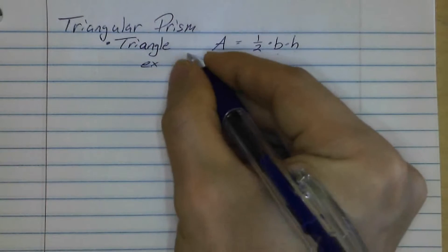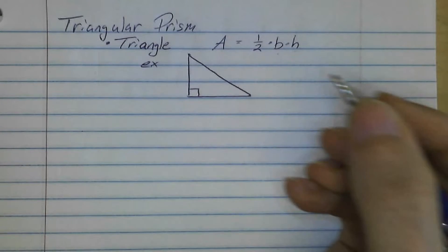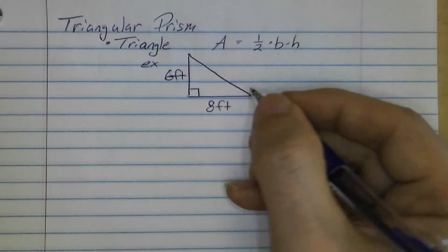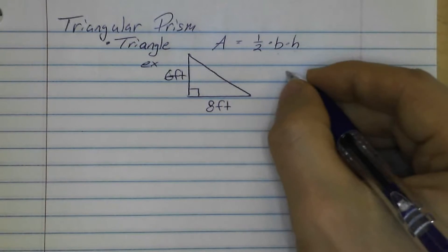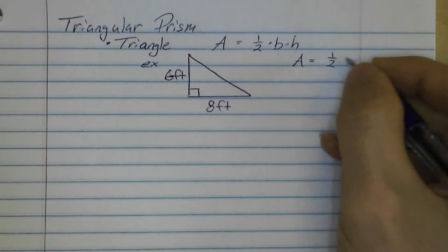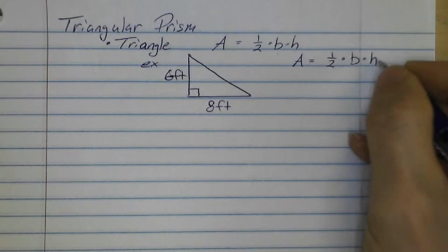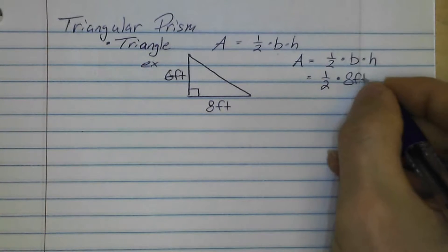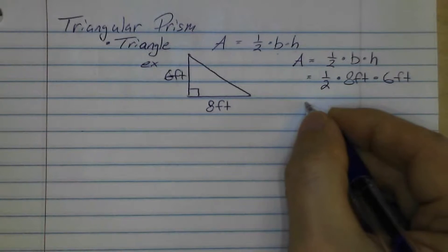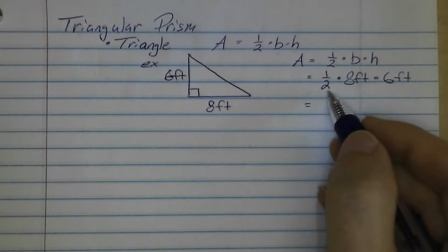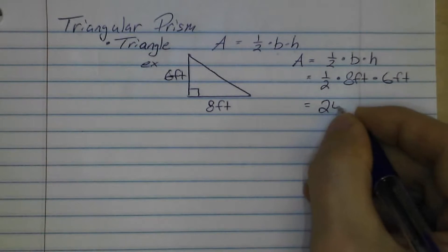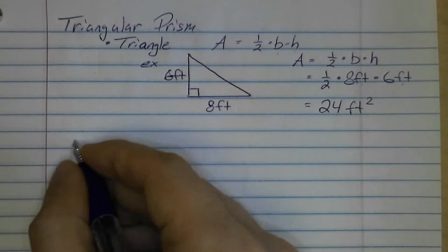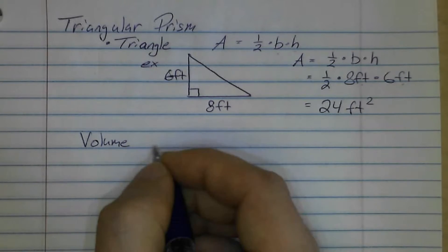Let's draw an example using a right triangle — one with a 90-degree angle — with a height of 6 feet and a base of 8 feet. You can mix these up in the formula; it doesn't matter. Area equals one-half times 8 feet times 6 feet. One-half times 8 times 6 equals 24, and since we have feet twice, the units are feet squared. So the area is 24 feet squared.